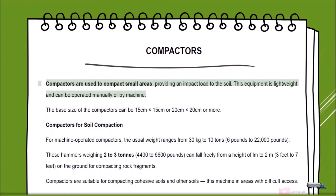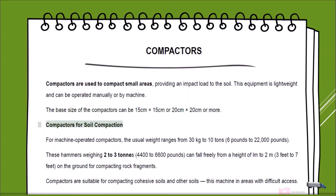Compactors are used to compact small areas, providing an impact load to the soil. This equipment is lightweight and can be operated manually or by machine. The base size can be 15 cm × 15 cm, 20 cm × 20 cm, or more. For machine-operated compactors, the usual weight ranges from 30 kg to 10 tons (6 to 22,000 pounds).